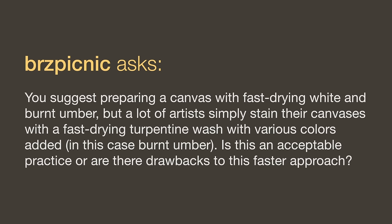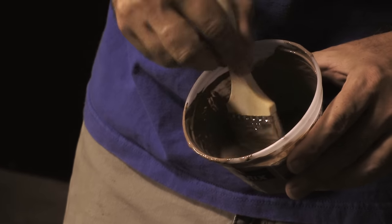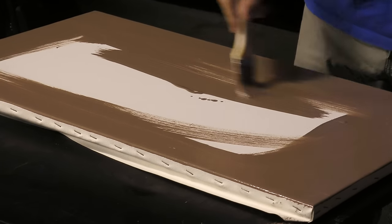You suggest preparing a canvas with fast-drying white and burnt umber, but a lot of artists simply stain their canvases with a fast-drying turpentine wash with burnt umber added. Is this acceptable or are there drawbacks? Certainly you can do it that way. When I first started I used to do a burnt umber wash because I had read about somebody doing that. The reason I switched to just painting it on is that I thought it was actually faster — but when you're doing the burnt umber wash you can get streaks and lines. So if you're doing a portrait and want a more even, consistent surface, then do it the way I teach in my staining canvas video, which is a free video on drawmixpaint.com. But the stain approach can certainly work just fine.